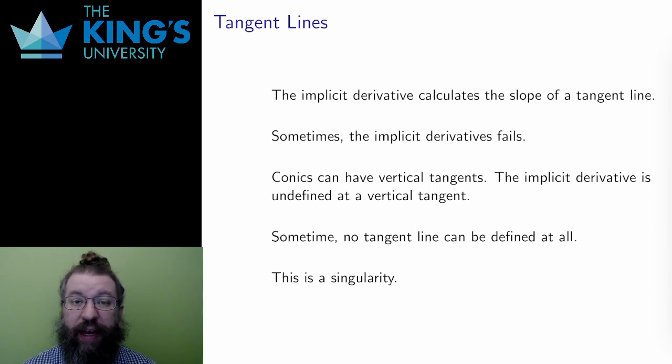In the previous video, I defined an algebraic plane curve, a locus of a polynomial in two variables. I promised that we would investigate the behavior of these curves using the implicit derivative. The implicit derivative calculates the slope of a tangent line to a locus. However, it doesn't always work.